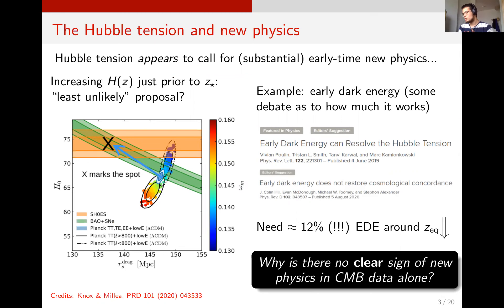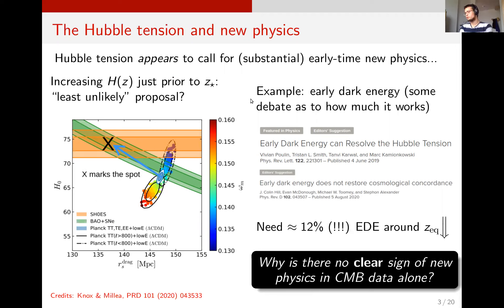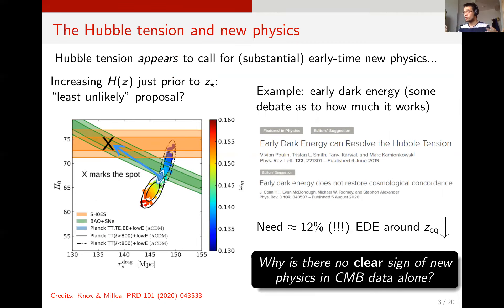We get a more complete picture when we look at the role of BAO measurements and of the sound horizon especially. It appears that a model which solves the Hubble tension should lower the sound horizon by about seven percent. One prototype model which achieves this is early dark energy, by enhancing the expansion rate just before recombination. The Hubble tension is a roughly five sigma tension, so if you want to solve it you need a substantial amount of early time new physics.